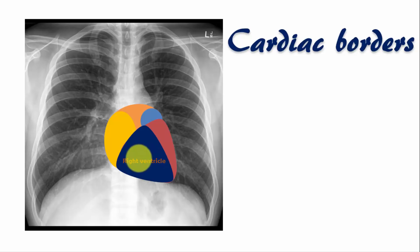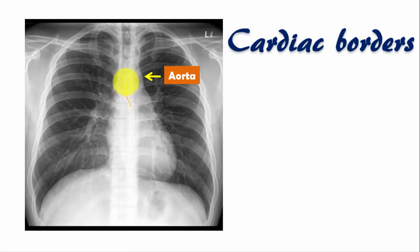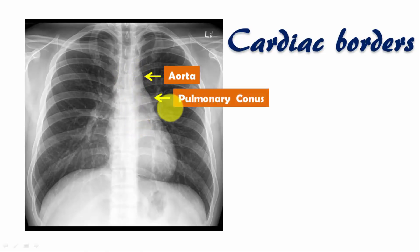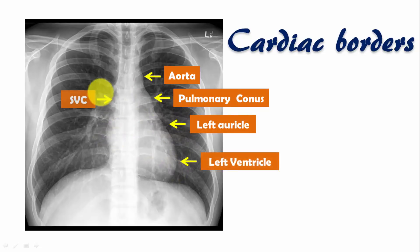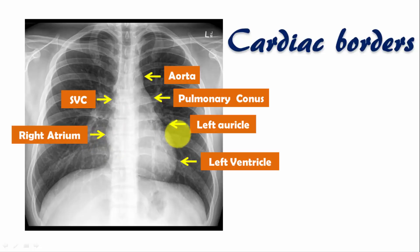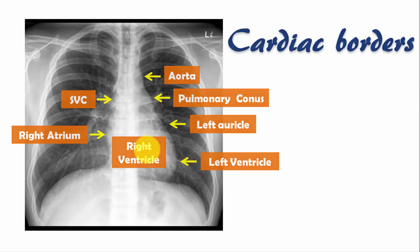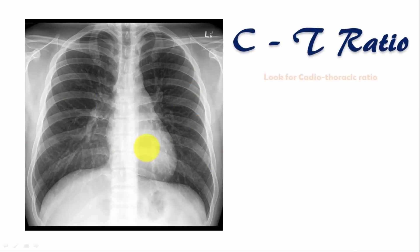The right ventricle forms the anterior part of the heart in the chest X-ray. Looking at the borders: here is the aortic knuckle, the ascending, transverse, and descending parts of the aorta, the pulmonary conus, the left auricle, the left ventricle, the superior vena cava, and the right atrium. The entire right border of the heart is formed by the right atrium, and the left border by the left auricle and left ventricle. The anterior part of the heart shadow consists of the right ventricle.